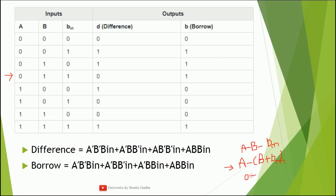For the entry zero, zero, one: we get zero minus (zero plus one) = zero minus one. With a half subtractor we know zero minus one requires a borrow, so zero becomes ten (binary). Ten minus ten equals zero, so difference is zero and borrow is one.